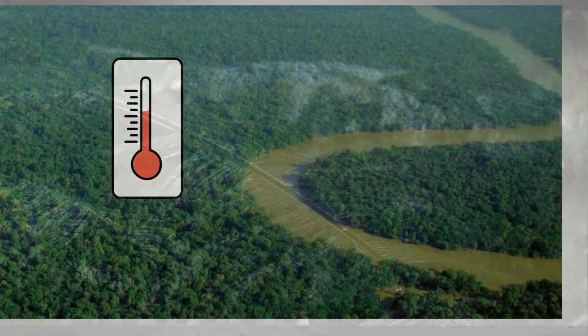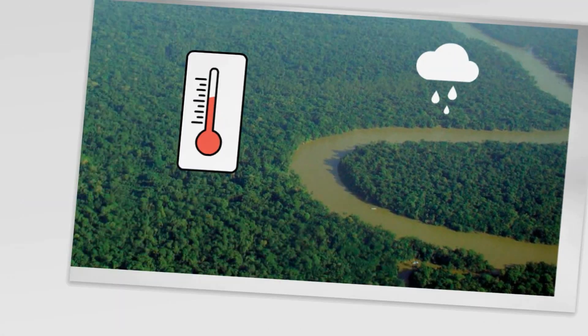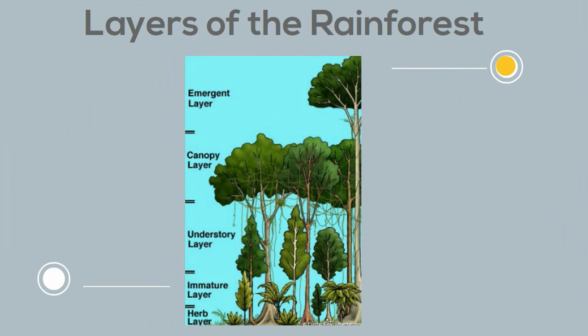The average temperature of a tropical rainforest falls between 93 degrees and 70 degrees Fahrenheit year round. Tropical rainforests receive up to 100 inches of rain. Because rainforests receive so much rain, they can support lots of trees.